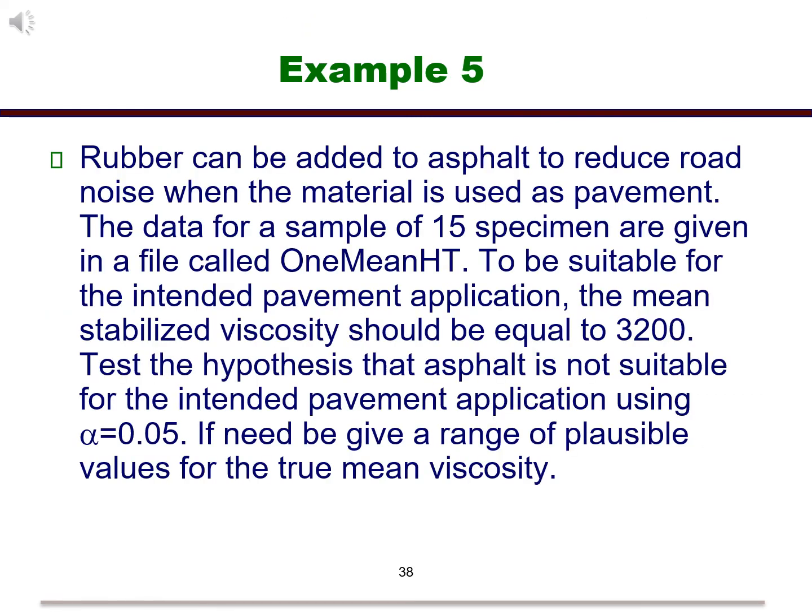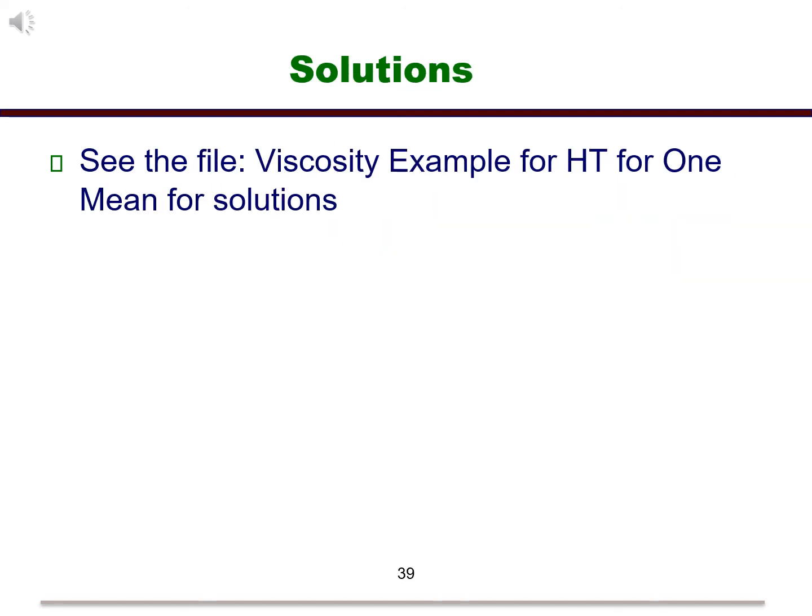Here is an example. Notice that we have a sample size of 15 with a normal distribution. Also, we do not have any information about sigma, which means that we should assume that it is unknown. Given the size of the sample and the fact that we don't know sigma, we will use a t-test. To see the solutions for this problem, please check out the file called viscosity example for HT for one mean.